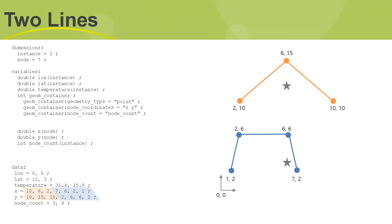For lines, we use the same nodes but connect the dots between them. The structure is exactly the same as for points — the only change needed is on the geometry container: update the geometry type from 'point' to 'line'. That's how we transition from points to lines.